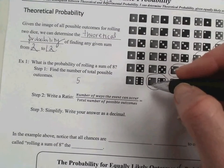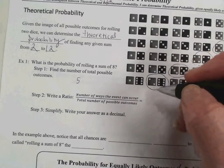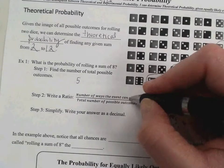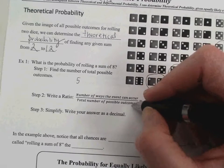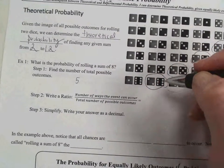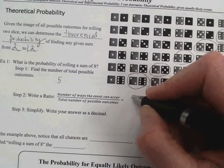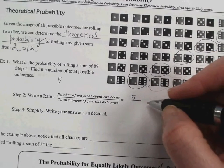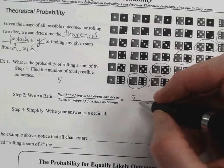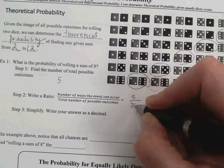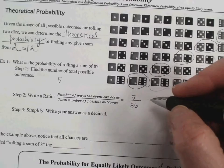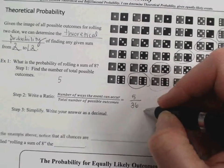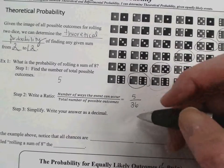Step 2 would be to write the event as a ratio. So we would write it as the number of ways the event occurs divided by the number of possible outcomes. What are the number of possible outcomes when rolling dice? 36. So 5 out of 36 would be the probability of getting the sum of 8.